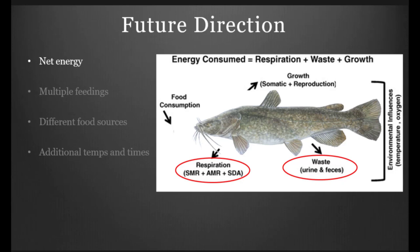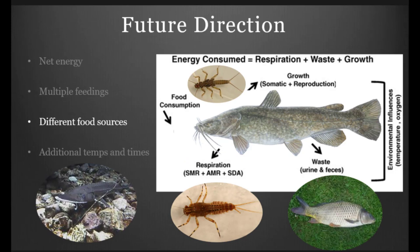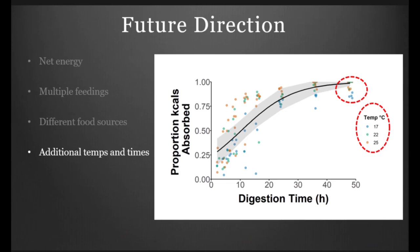The future direction of our project is to hopefully examine more net energy. Examine energy losses due to respiration, energy loss due to waste, and come up with a more direct estimate of food consumption. We'd also like to look at multiple feeding events, which is more indicative of wild caught fish, not just a single ration. Look at actual food sources that are native to this species, and also look at the net energy that's available in those species as well. Additionally, just look at some additional temperatures, along with additional dissection times to see how that might change.